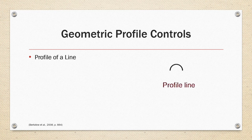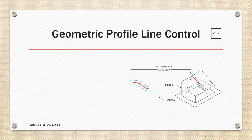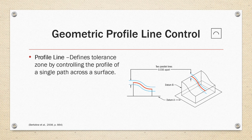Profile of a line and profile of a surface are the two profile controls. Profile of a line defines a tolerance zone by controlling the profile of a single path across the surface. In the example on the right, the path across the surface must fall within a .030 tolerance zone to be compliant. Typically profile tolerances require at least one datum for reference.